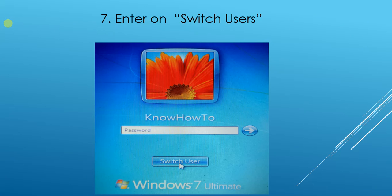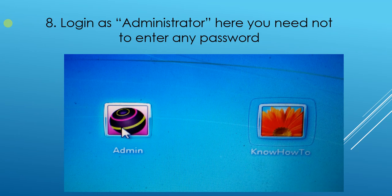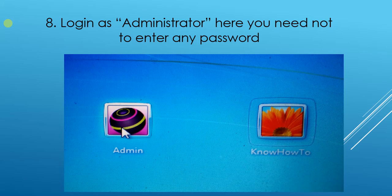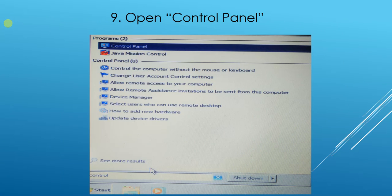Once the computer restarts into Safe Mode, click on Switch Users. If you also have an administrator user, you will see two icons in Windows. As you can see, I got one Admin icon and another Know How To icon. Click on the Admin icon — when you click on it, you do not need to enter any password.